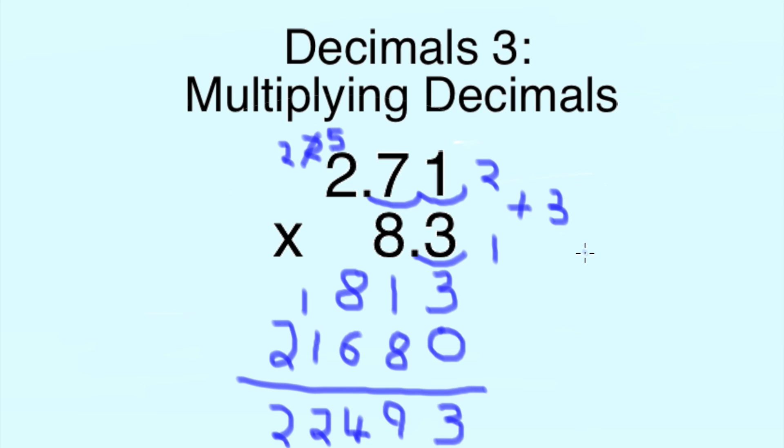So 3, we work 3 places back from the final number, 1, 2, 3 and the point goes there. So our final answer for 2.71 times 8.3 is 22.493.